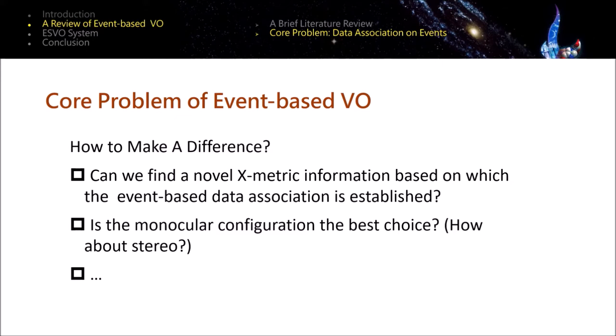Now we are clear about the core problem of event-based visual odometry. So how do we make a difference? We cannot stop asking questions like, can we find novel asymmetric information based on which event-based data association can be established? And is the monocular configuration the best choice? How about the stereo configuration? And driven by these questions, let's look at our recent work, event-based stereo visual odometry.